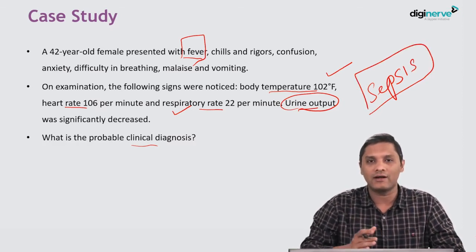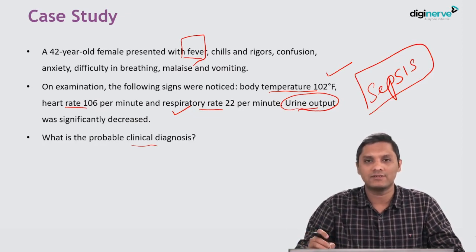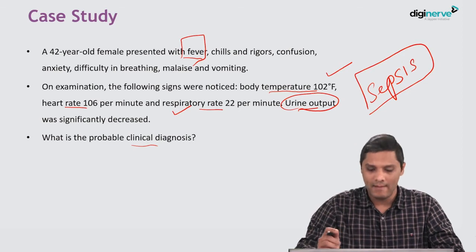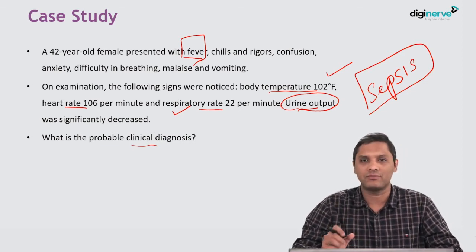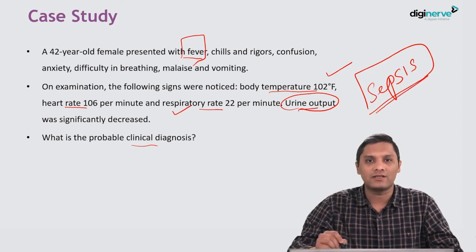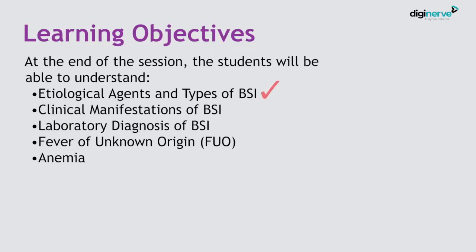The detailed diagnostic criteria used for establishing a diagnosis of sepsis will be discussed subsequently. Just keep the scenario in your mind. Sepsis is a type of bloodstream infection. The learning objectives of today's session are: we will discuss the various etiological agents and types of bloodstream infections, clinical manifestations, laboratory diagnosis, and treatment of bloodstream infection.